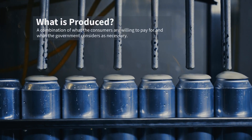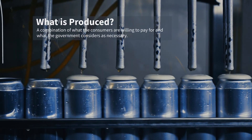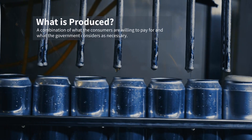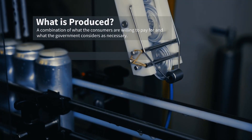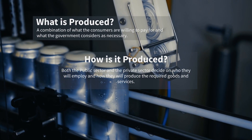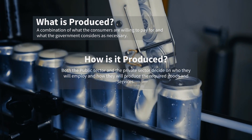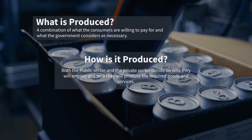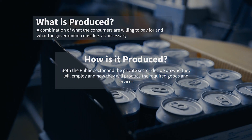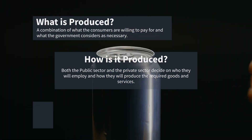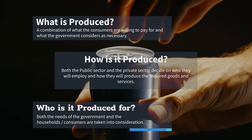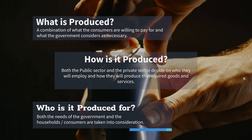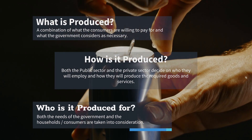What is being produced? A combination of what consumers are prepared to pay for and what the government regards as important. How is production going to take place? Both the government and private consumers decide on this — it depends on the product or service under discussion. For whom is it being produced? Both the government and private consumer needs are taken into consideration.